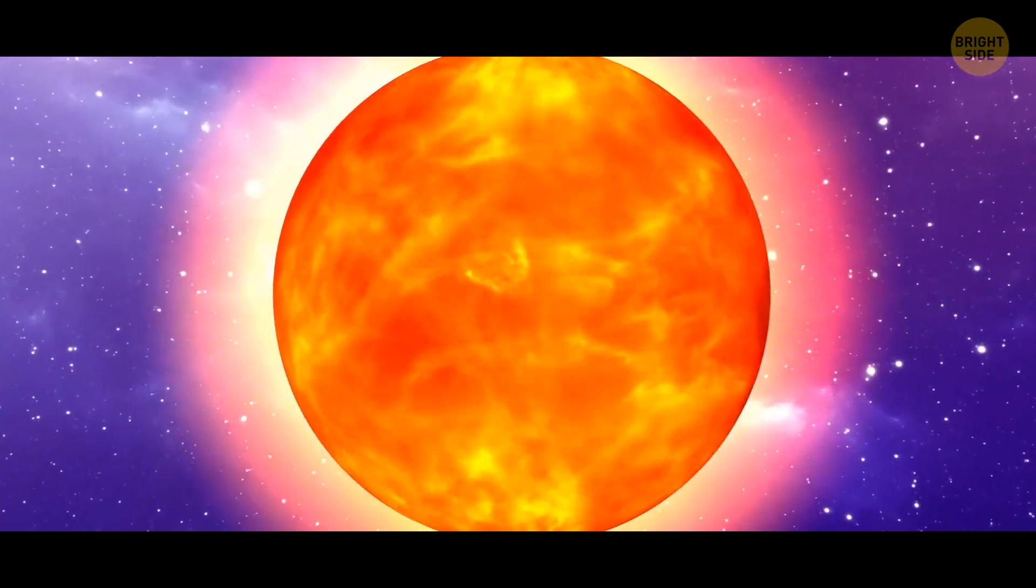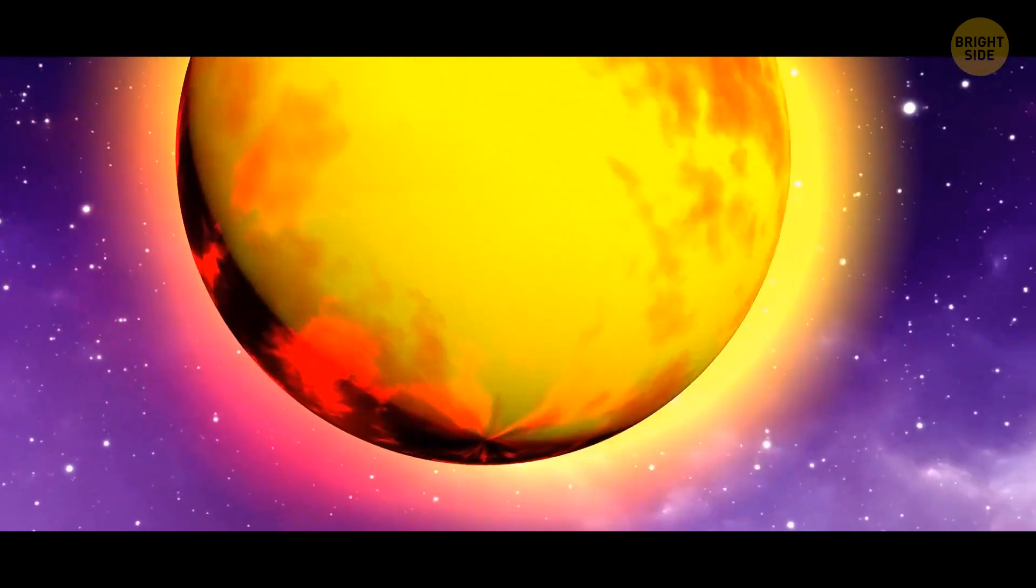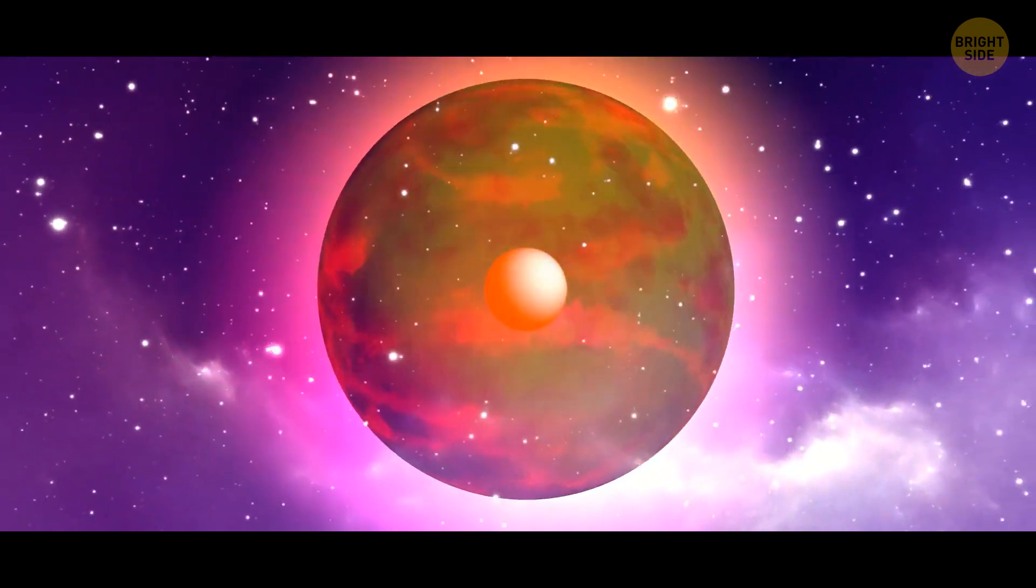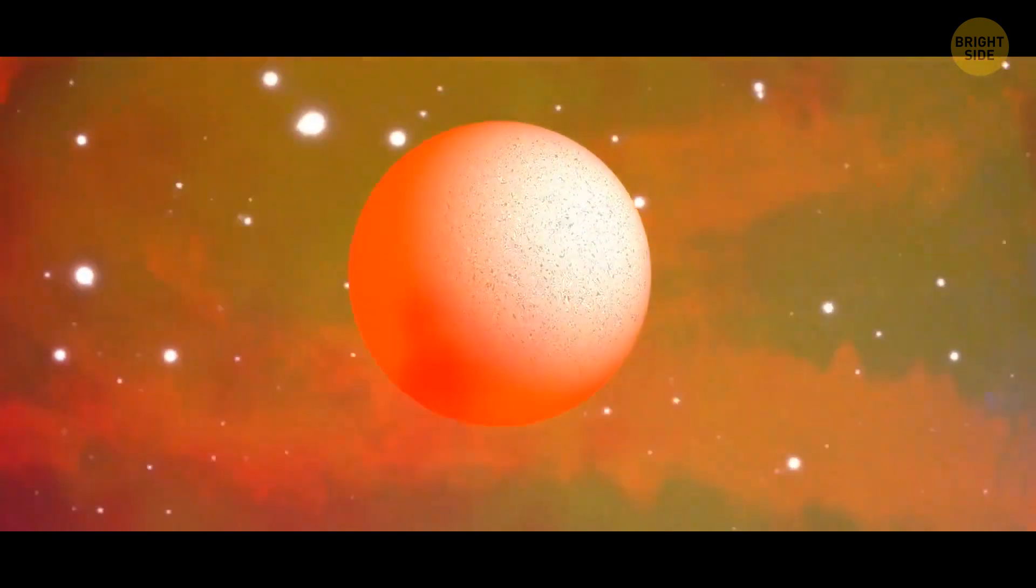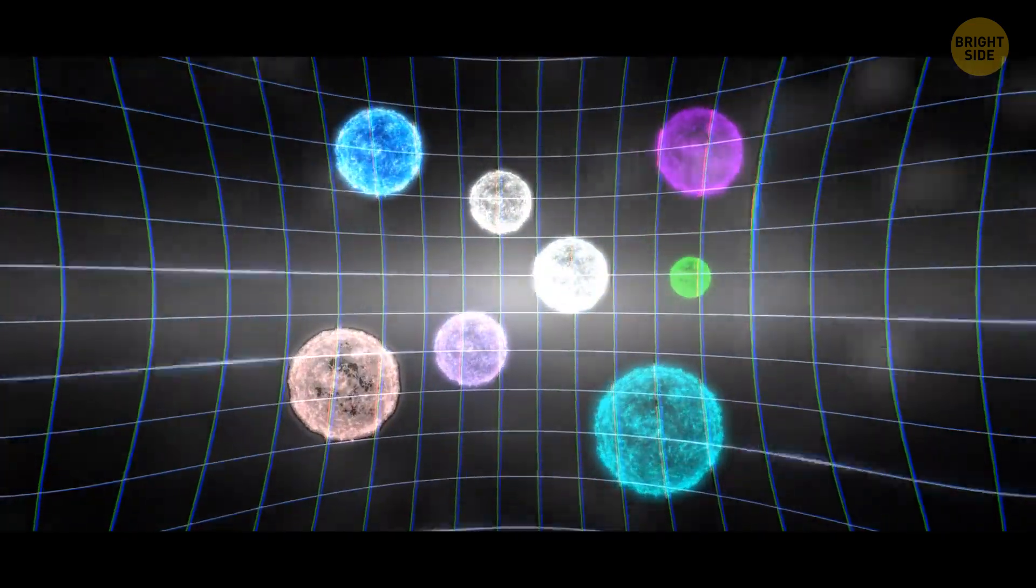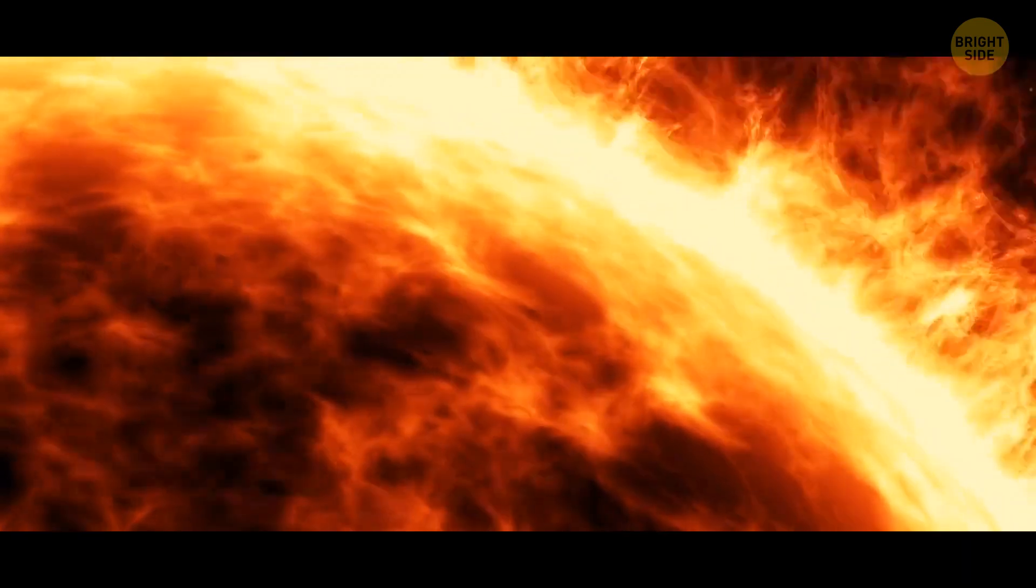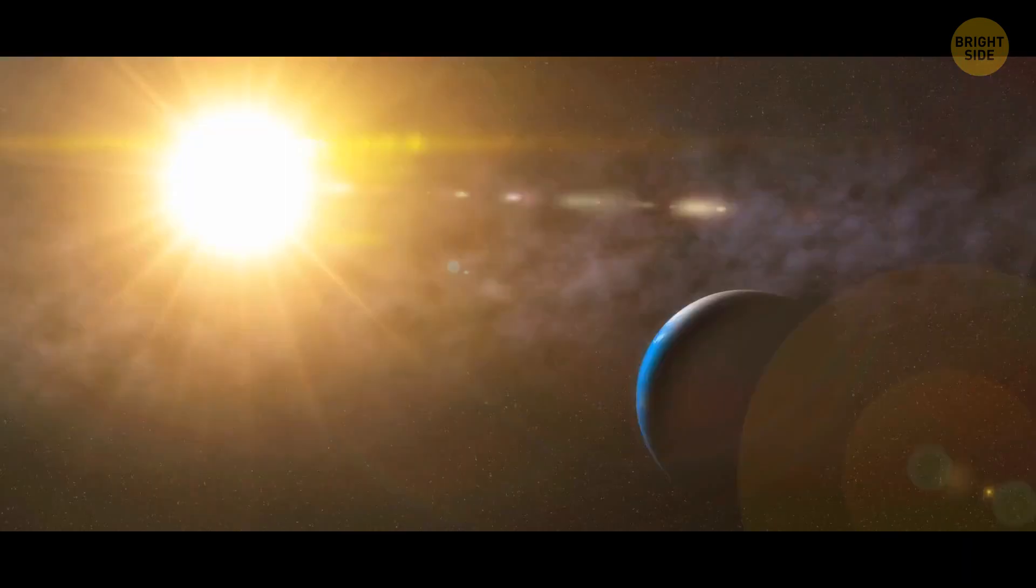First, we look for stars that have a lot of iron. Such stars burn at the perfect temperature for the development of life. And the iron in the star system will help form the cores of planets that will be home to another civilization. We sift the Milky Way through our sieve. We see that there are too many stars that fit the description, so we need another filter.